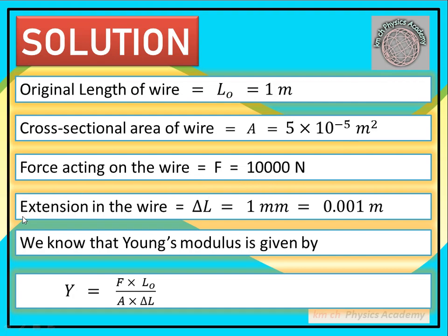اور اس force کی وجہ سے length میں جو اضافہ ہوا ہے، Extension in the wire، اس کو delta L رکھیں گے، وہ 1 millimeter ہے۔ اس کو meters میں بنا لیتے ہیں — mili کا مطلب 10 کی power minus 3 ہوتا ہے، تو یہ 10⁻³ meter، یعنی 0.001 meter بن جاتا ہے۔